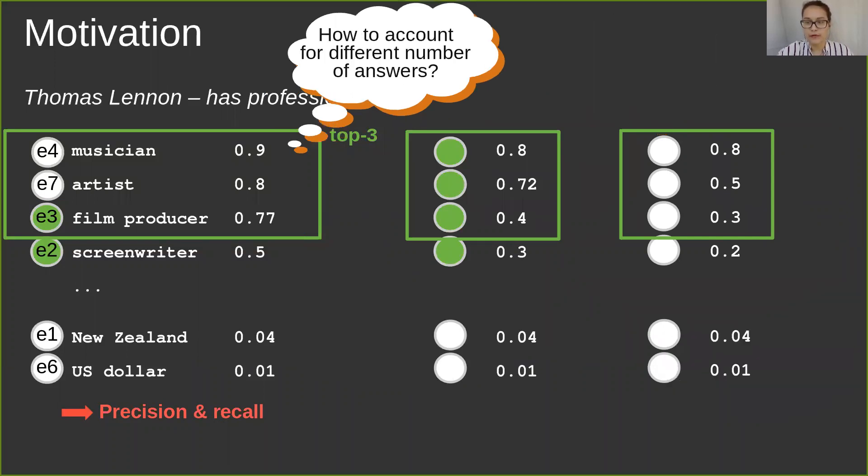We have to account for the variable numbers of answers, and one way to do so is to introduce a score-based threshold. In this example, we set it to 0.7. It allows the answer set size to be flexible among different queries.